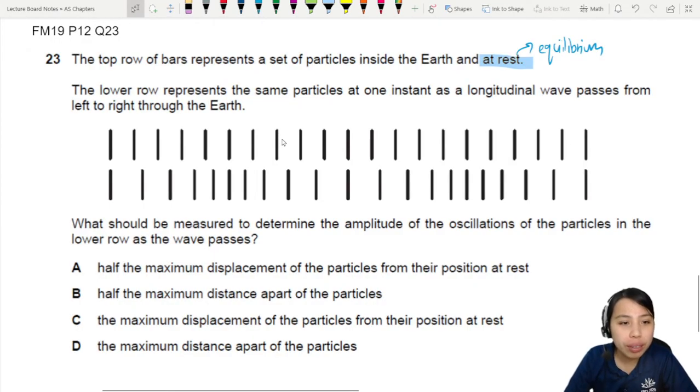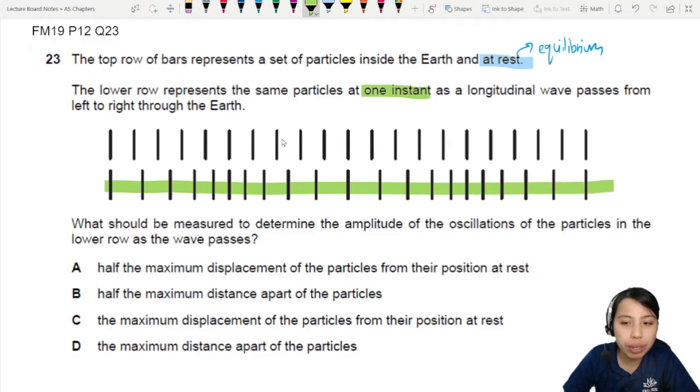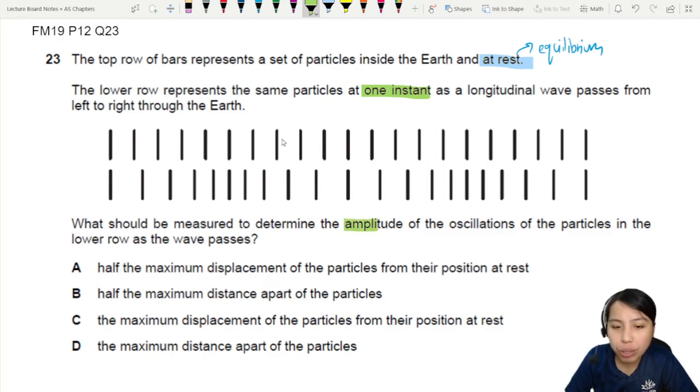The lower row represents the same particles at one instant as the wave passes through. So this one down here, imagine there's a wave passing through. Let's look at the animation to help you see it a bit. So what should be measured to determine the amplitude? How do we measure this? Of the particle in the lower row as the wave passes. Very hard to see. Let's look at animation.